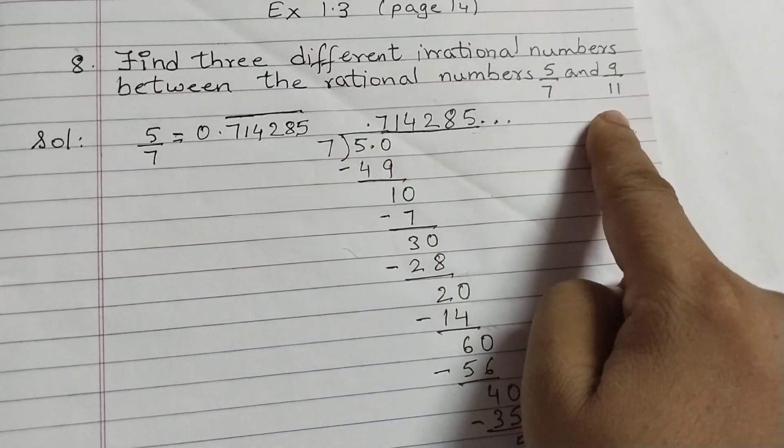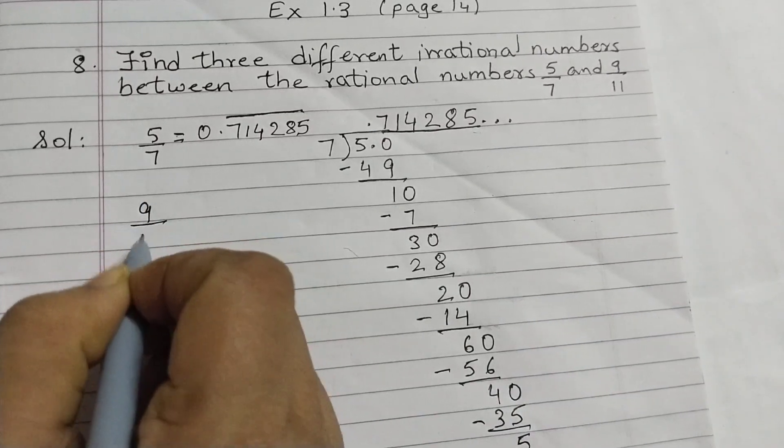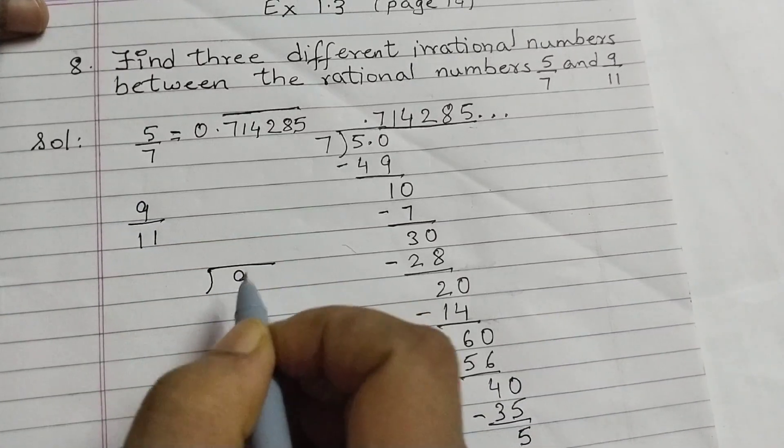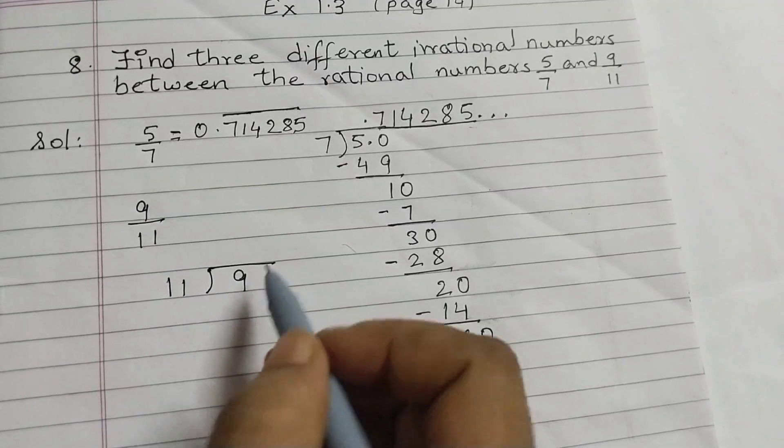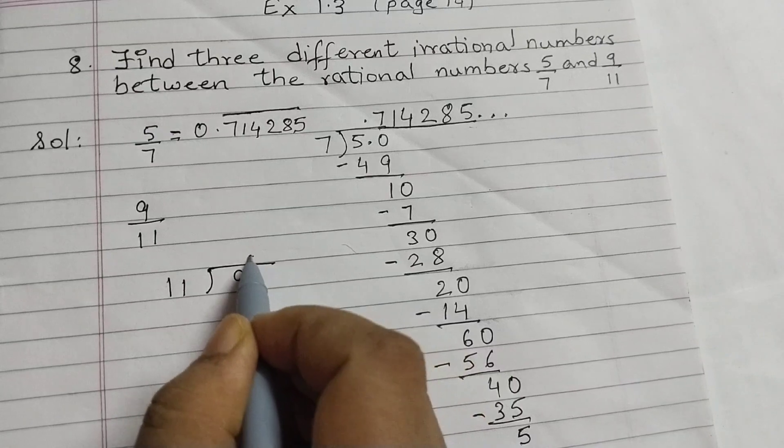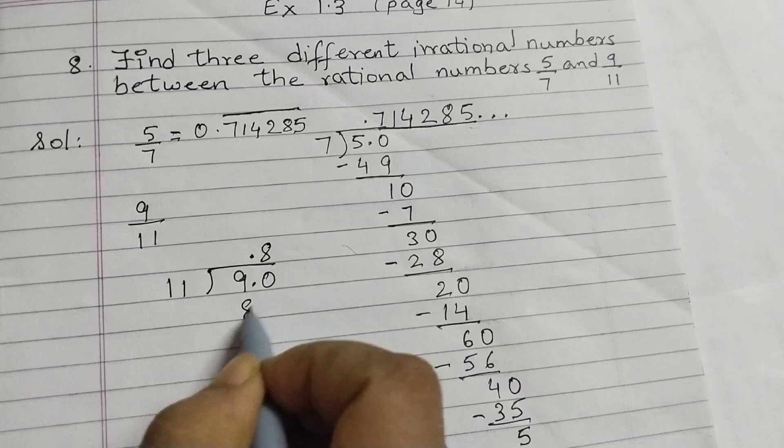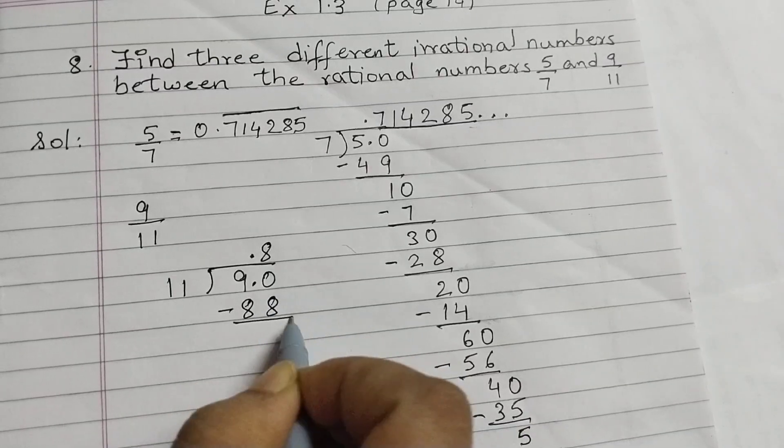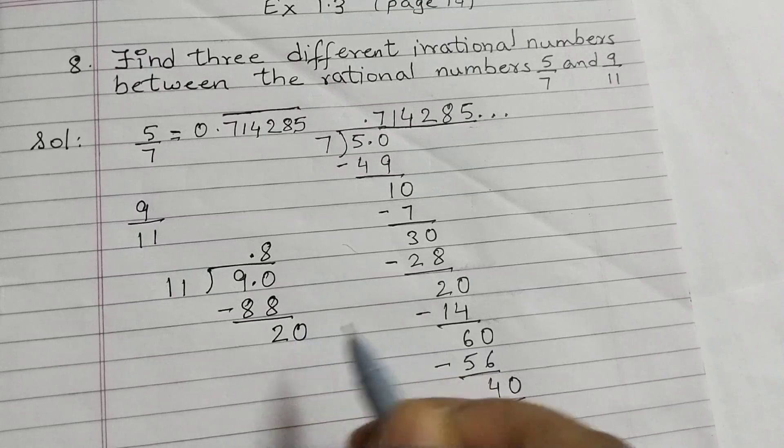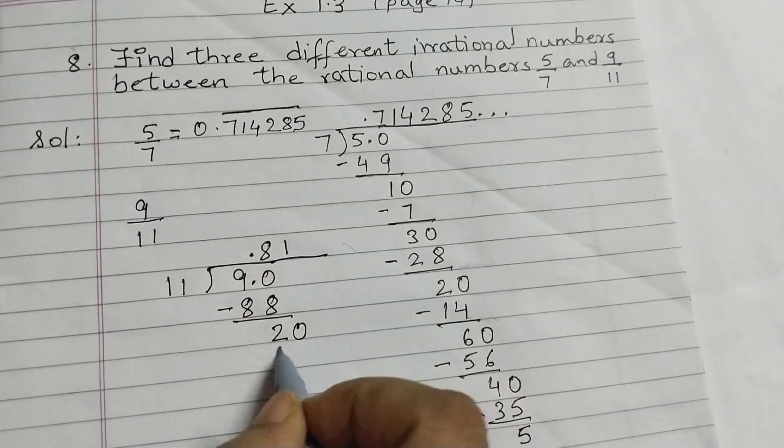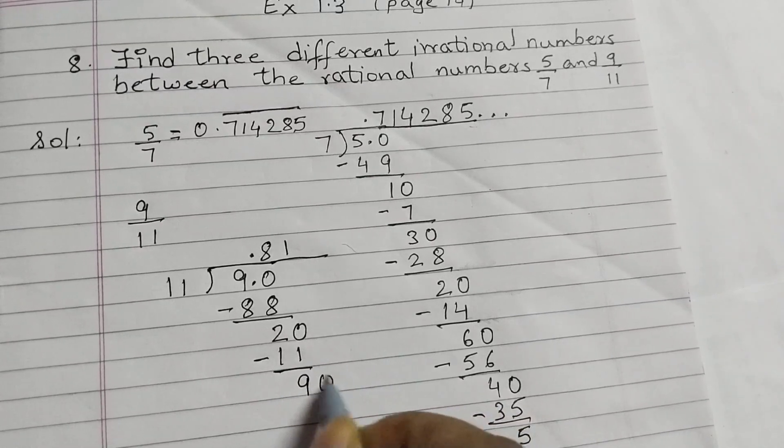Next we will find the decimal expansion of 9 by 11. So 9 by 11, 9 is inside, 11 outside. 9 is smaller than 11, put a point, so decimal point here as well, 0. So 11, 8's are 88, minus 90 minus 88 is 2, put a 0. 11, 1's are 11, 20 minus 11 is 9, put a 0.